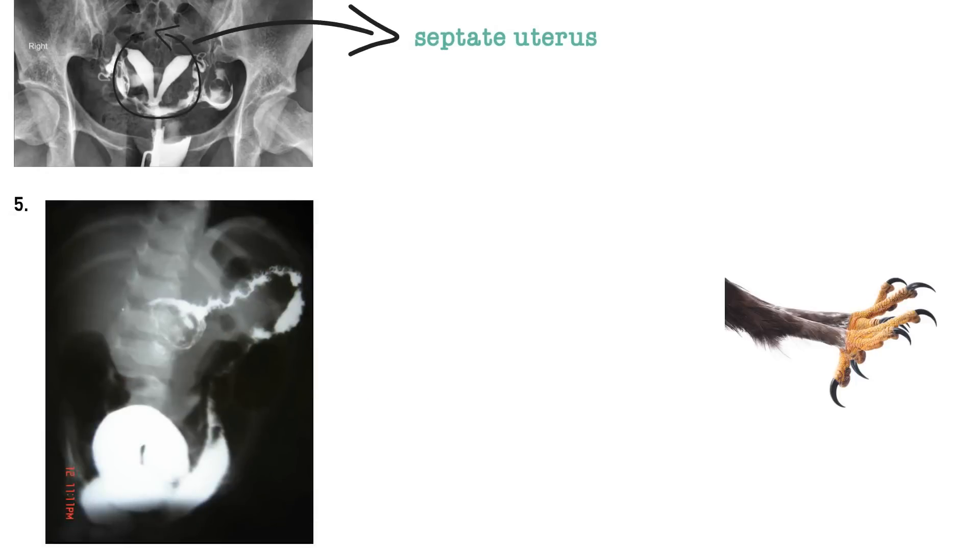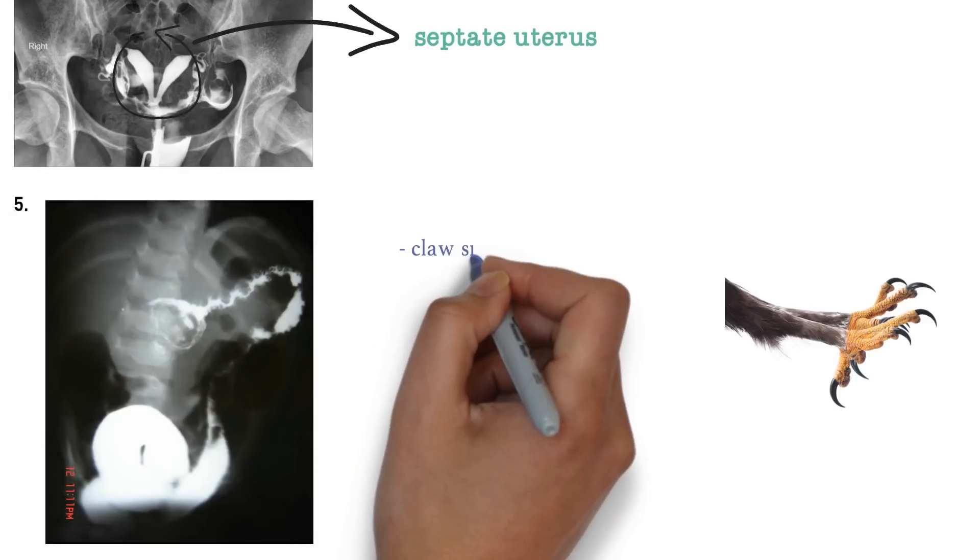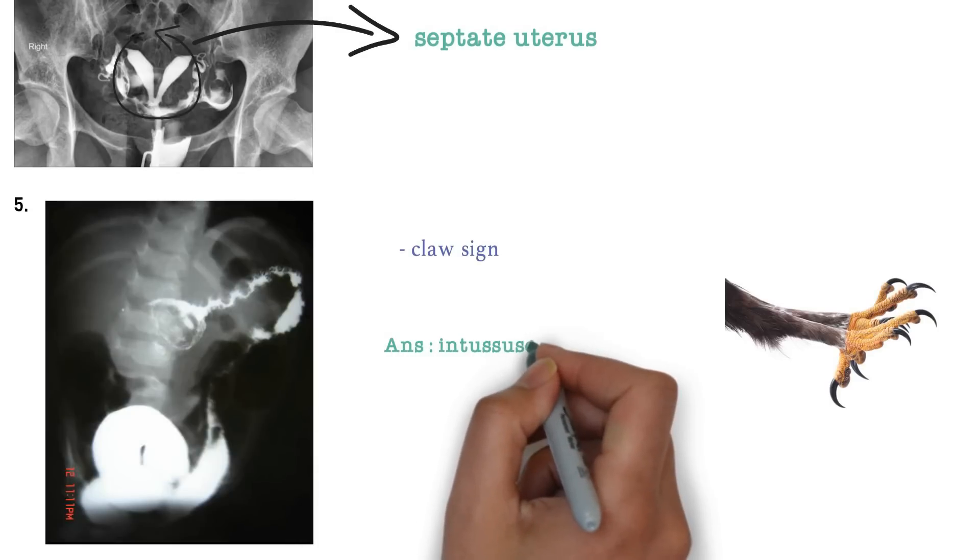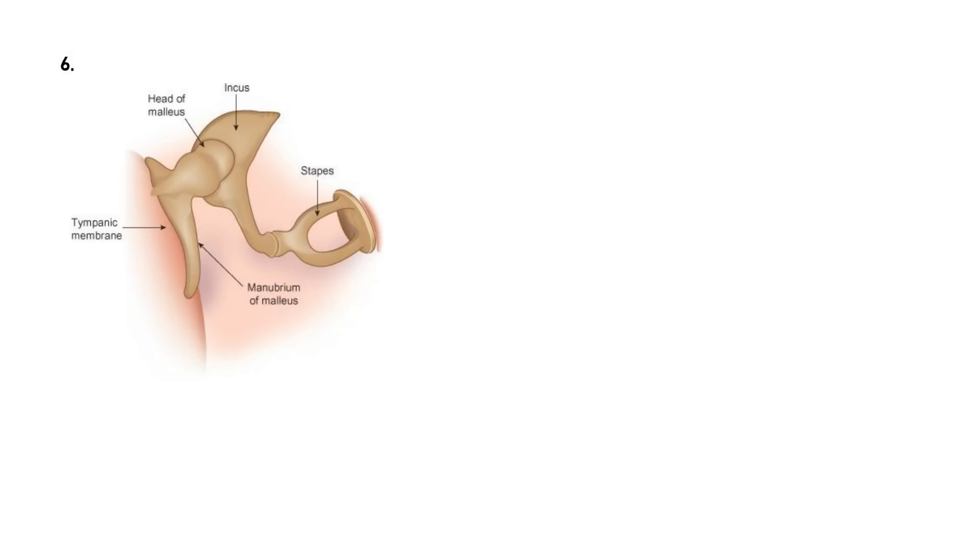My next question: look over here, what is it? You can see here we have the claw sign, and the answer is intussusception.